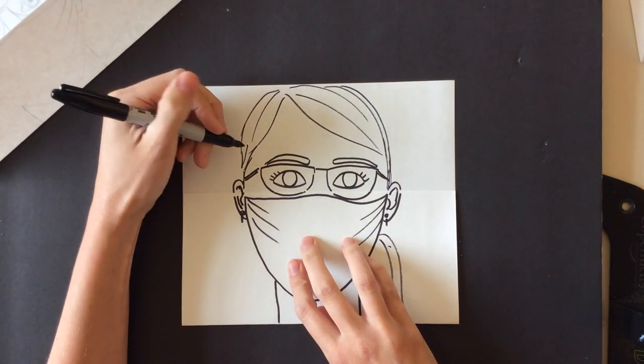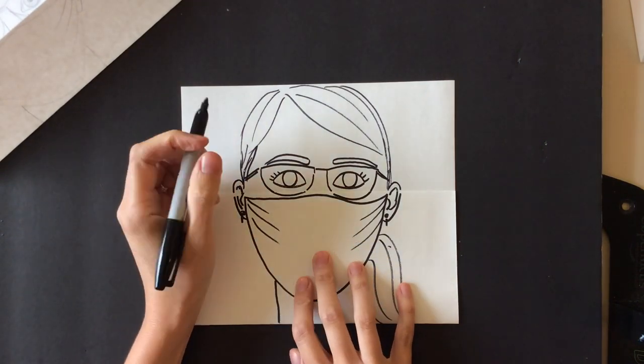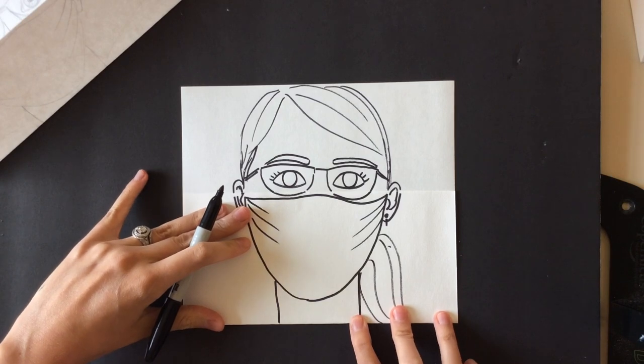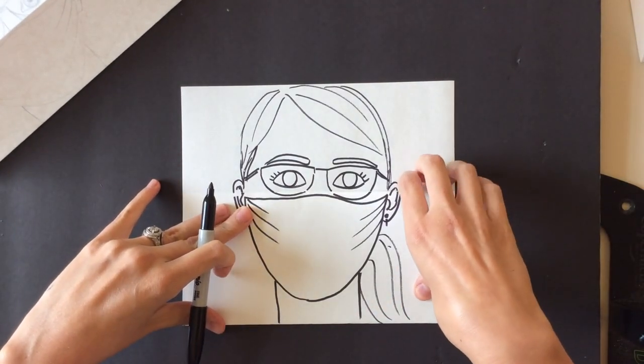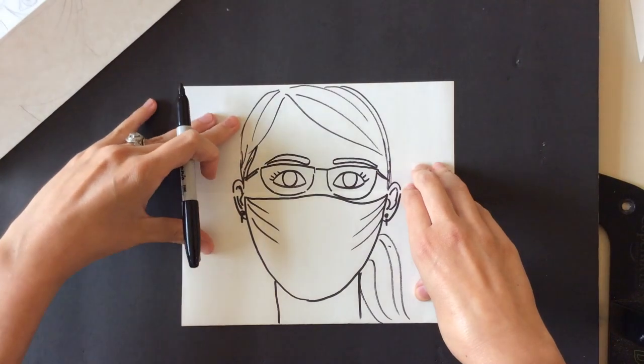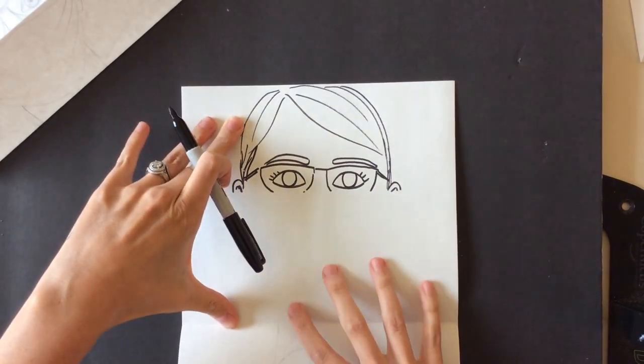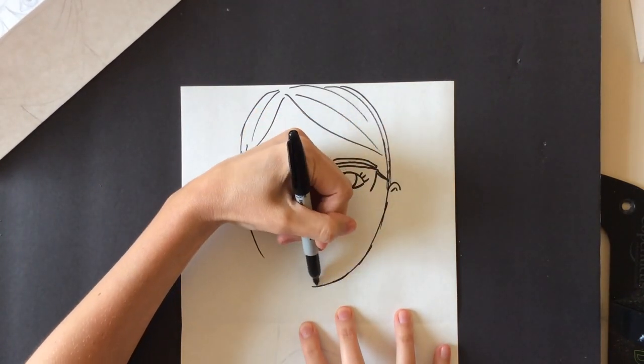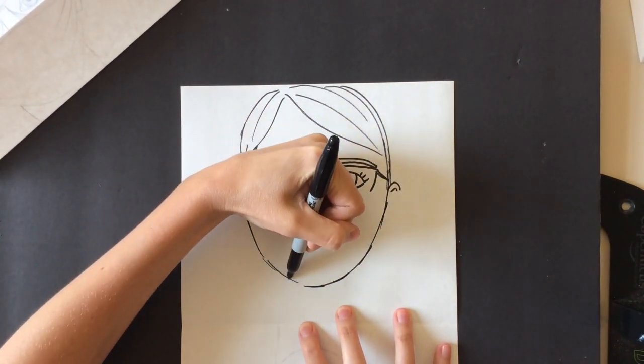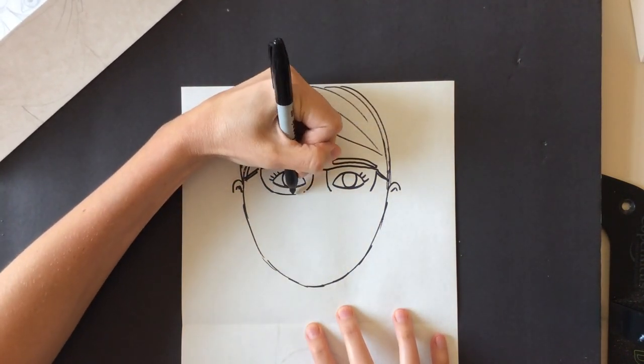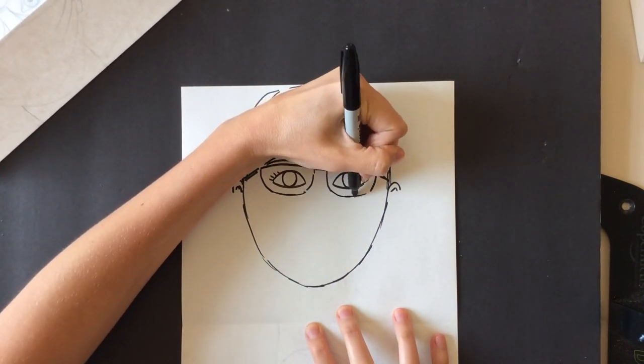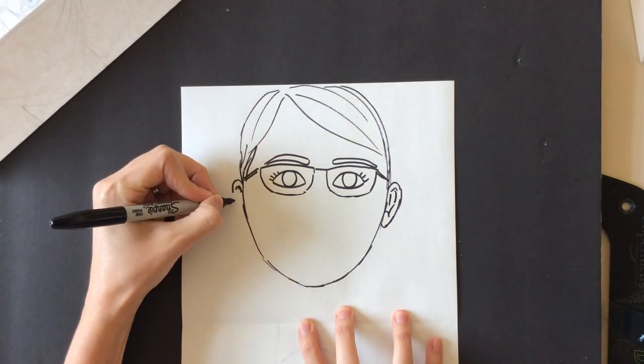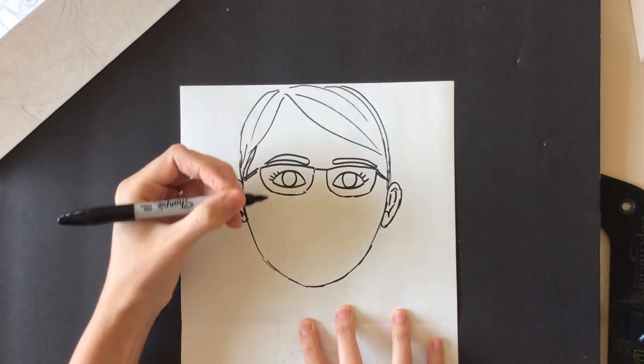Now, older students, I definitely want you to look in the mirror and get some reference images and things like that to really make this detailed. But I'm just going through the basics of how to draw this folded. Now, what we're going to do is we're going to open it and we're going to finish the chin on this part, just like we did before. If you have glasses, you can just kind of finish them. Same thing with the ears. So you're just completing the things that are incomplete.